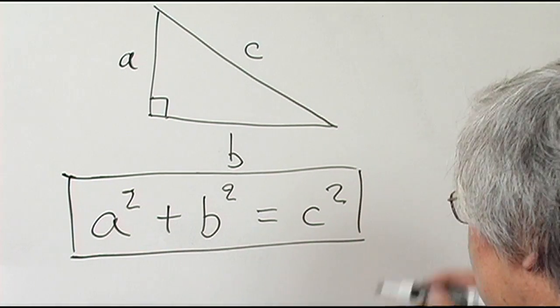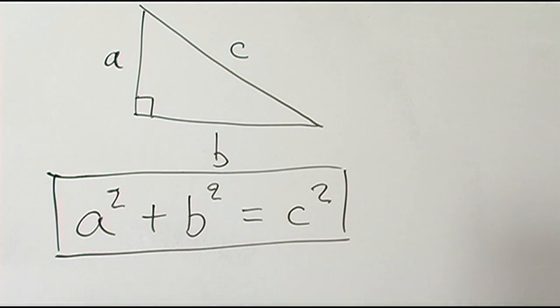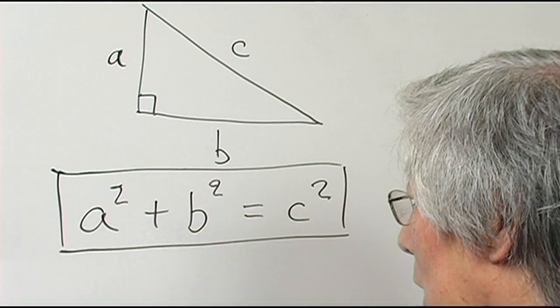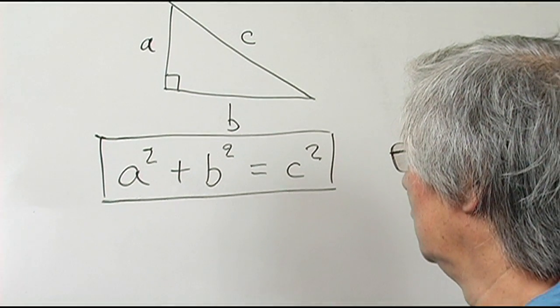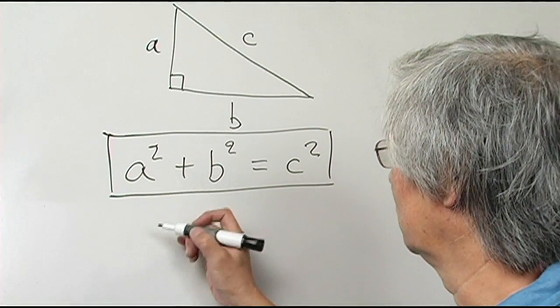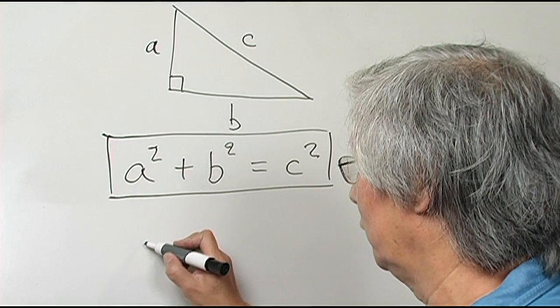This is the relationship. Now let me give you an example. One very familiar right triangle is the 3, 4, 5 triangle.